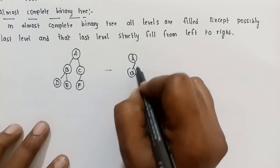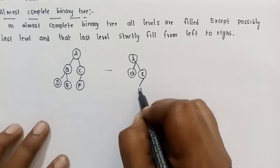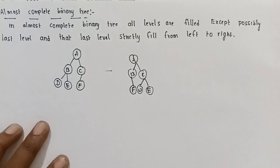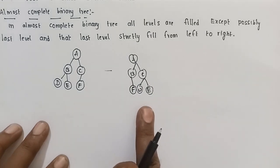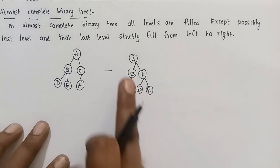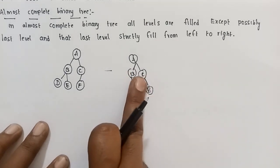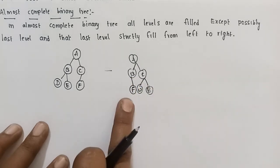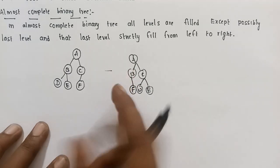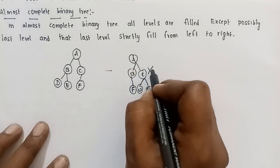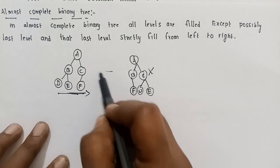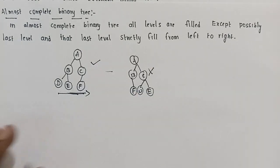For example: A, B, C, D, E, F — this is an almost complete binary tree. The last level is filled from left to right. This is an almost complete binary tree. We have now covered all the different types of binary tree.